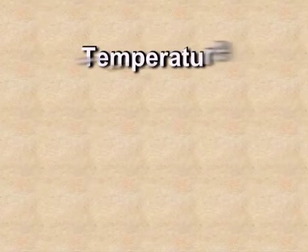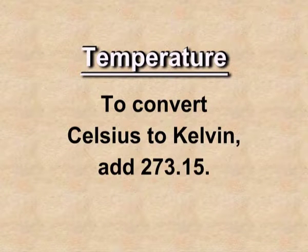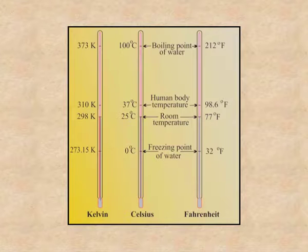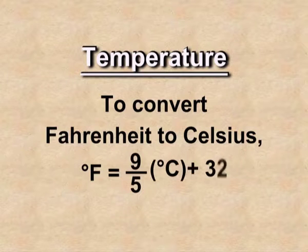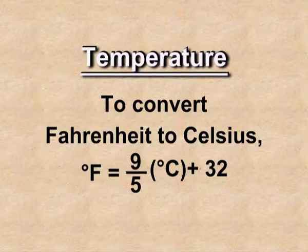Temperature is the degree of hotness or coldness of a body. We use three fundamental scales to measure temperature: degree Celsius, degree Fahrenheit, and Kelvin. All three scales are interconvertible. We can convert degree Celsius into Kelvin by adding 273.15. For example, 0°C equals 273.15 K, and 100°C equals 373.15 K. Degree Fahrenheit can be converted into degree Celsius using the formula: °F = (9/5 × °C) + 32.